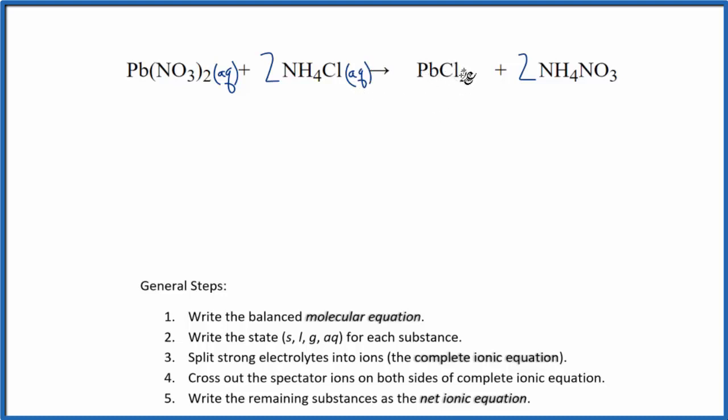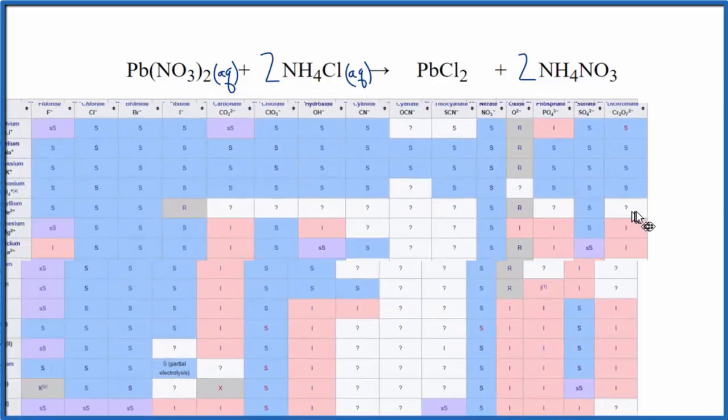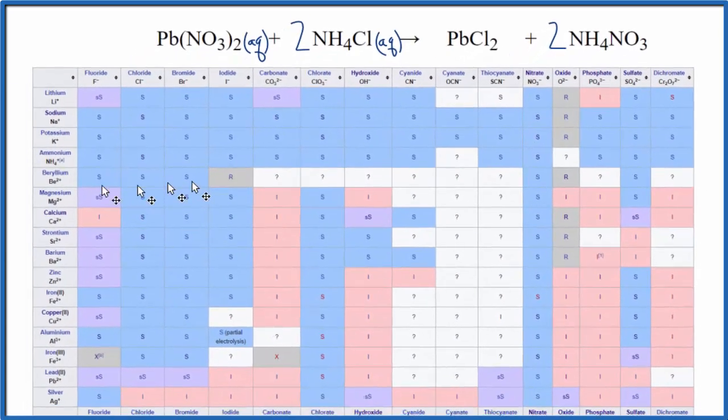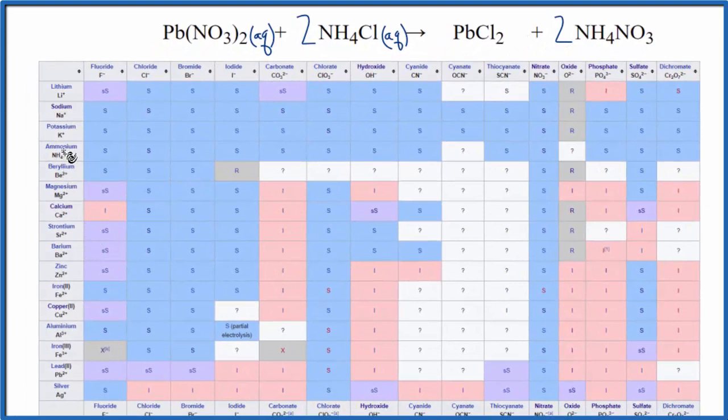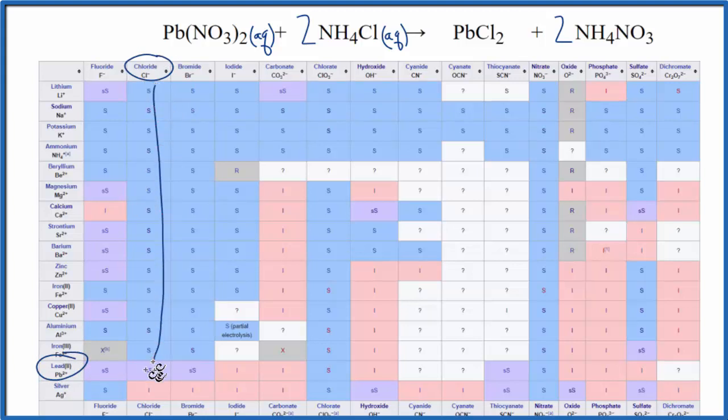This lead two chloride here, I'd like to look that up on a solubility table. We can find lead, that's the positive ion. Lead is Pb right down here. And then chloride's here. So if we go all the way down and we come across, it's SS.